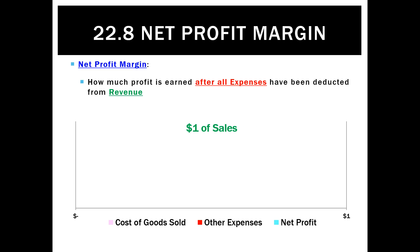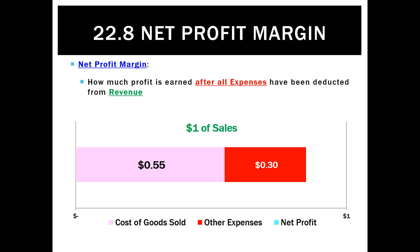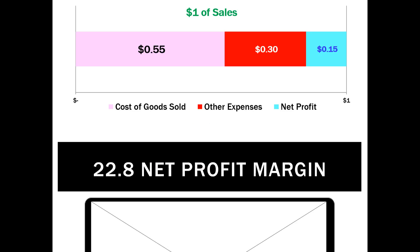If we represent this as a graph, with each sales dollar as our bar, we can say 55 cents of every dollar goes on cost of goods sold — buying the stock and getting it ready for sale. 30 cents of every sales dollar covers other expenses. What's left at the end is ours to keep — that's our net profit. A net profit margin of 15% works out at 15 cents of net profit in every sales dollar.